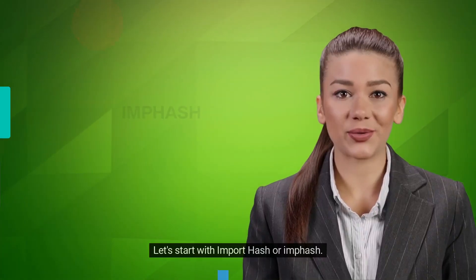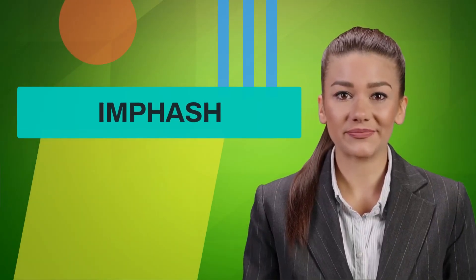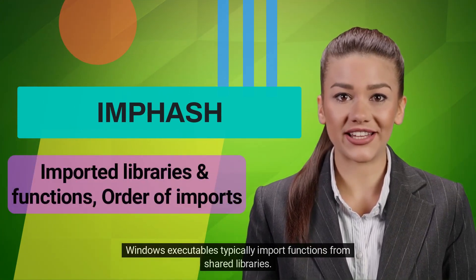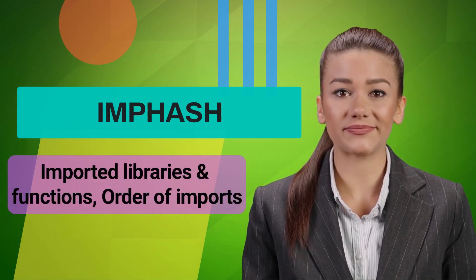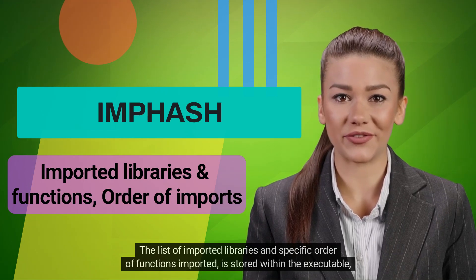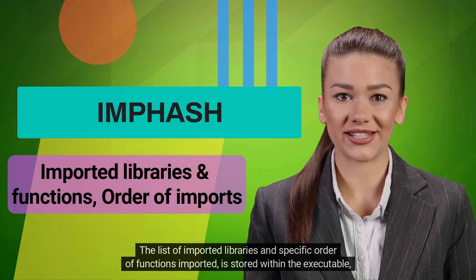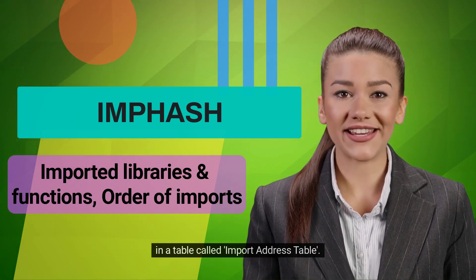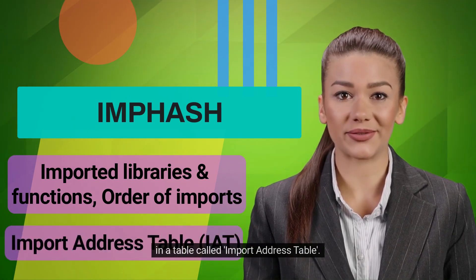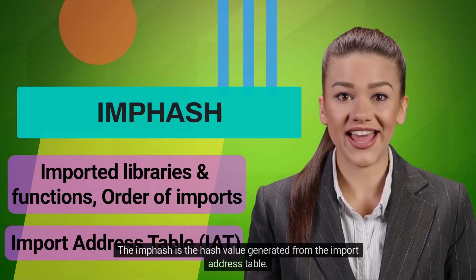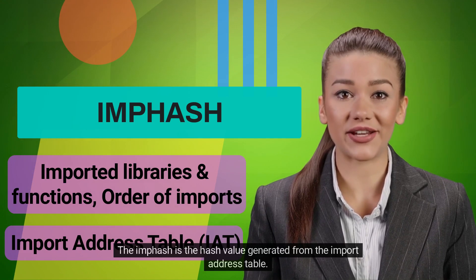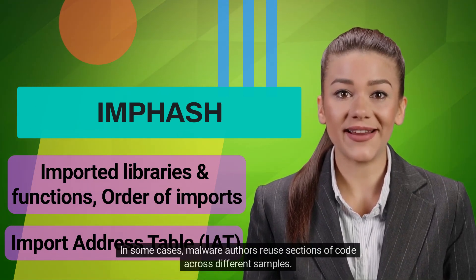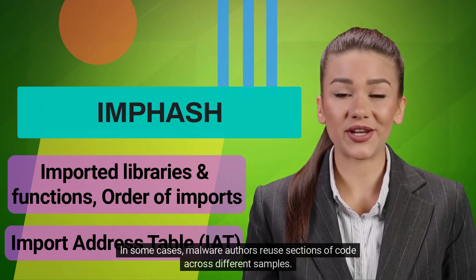Let's start with import hash, or ImpHash. Windows executables typically import functions from shared libraries. The list of imported libraries and the specific order of functions imported is stored within the executable in a table called the Import Address Table. The ImpHash is the hash value generated from the Import Address Table.